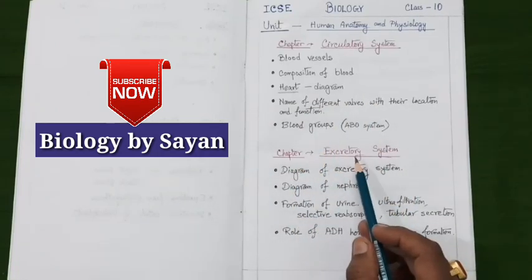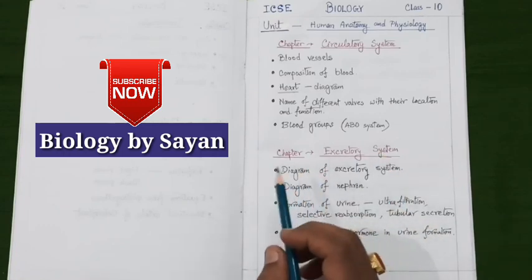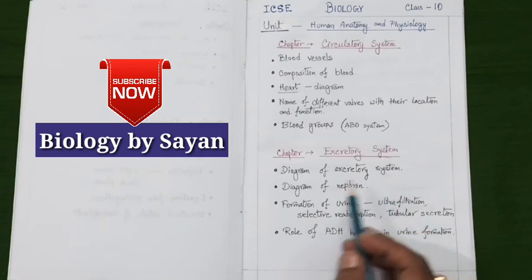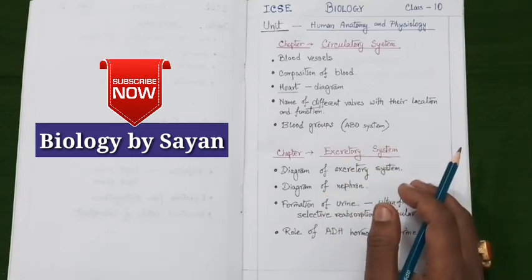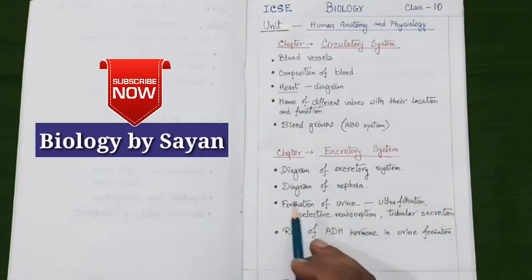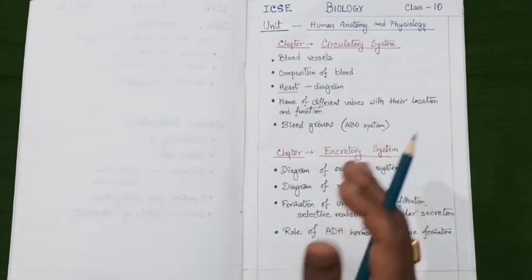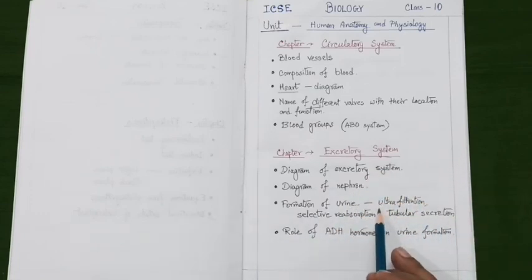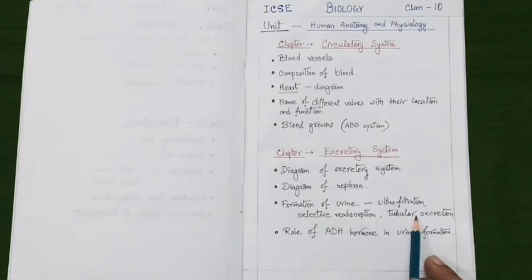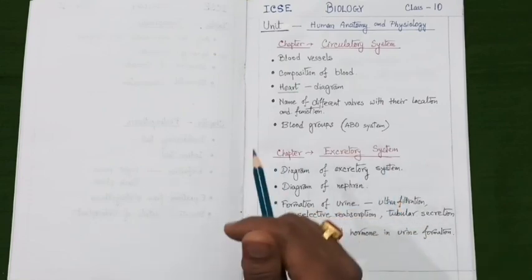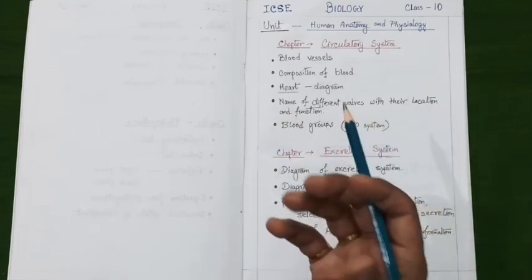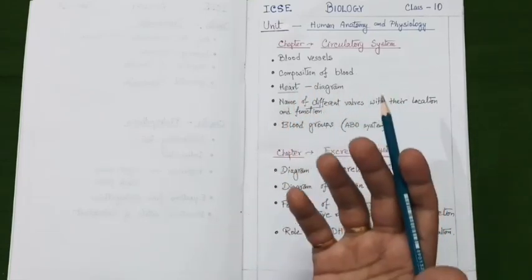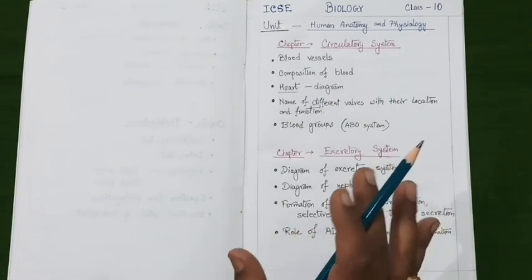Next, let's discuss the excretory system. Here you have to prepare diagrams of the excretory system and the nephron with detailed structural portions, descriptions, and functions. You also need to memorize the detailed mechanism of urine formation, including processes like ultrafiltration, selective reabsorption, and tubular secretion. A very vital section is the role of ADH hormone in urine formation — you may expect questions on how concentrated or dilute urine is formed, or how diabetes insipidus takes place in our body.